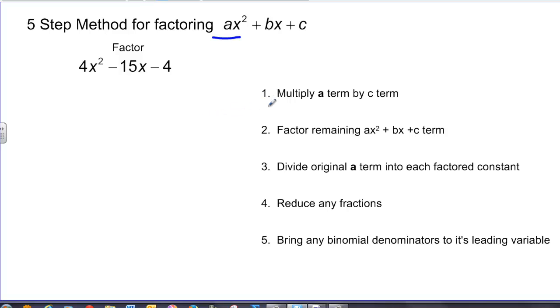So in my first of 5 steps, I'm going to take and multiply the a term by the c term. In doing that, I get x squared minus 15x minus 16. Then I'm going to take and factor the remaining x squared plus bx plus c term. And in this case, we're always going to have a 1 in front of that x term. So again, it's like finding out what multiplies to c and adds or subtracts to b.